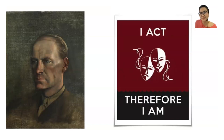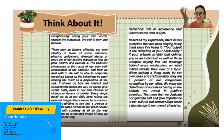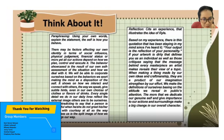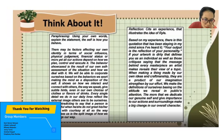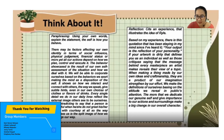For Gilbert Ryle, the self is the way I act — the self is how we behave. One group's reflection captures this well: the idea that your output is the reflection of your personality. The way you act reflects who you are. That would be Gilbert Ryle.